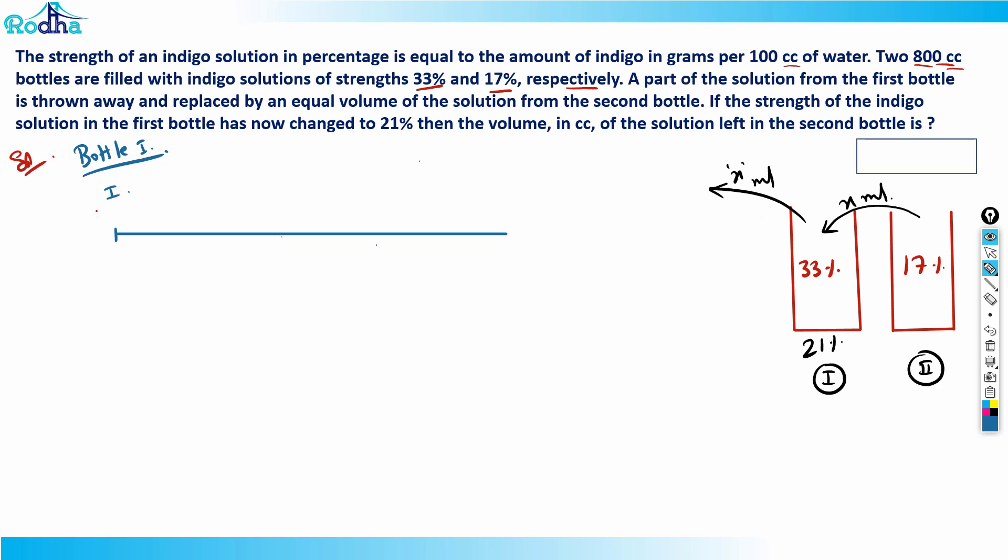In the first bottle, the indigo strength is 33%. From bottle two, 17% strength solution is mixed, and the combined effect is 21%. So what is the weight ratio, what part of bottle one and bottle two? This is liquid one and liquid two. I can calculate the distance ratio - this difference is 12% from the pivot and this difference is 4%.